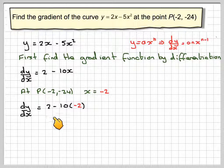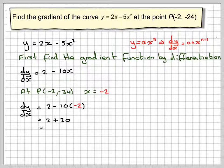So dy/dx will be 2 minus 10 times minus 2, which gives you 2 plus 20, which is equal to 22.